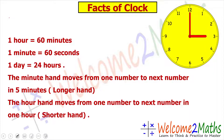Let me share some important facts about clocks. First: 1 hour is equal to 60 minutes, 1 minute is equal to 60 seconds, and 1 day is equal to 24 hours. In a clock there are two hands — one is the hour hand and one is the minute hand. The minute hand is the longer one, and it moves from one number to the next number in 5 minutes.